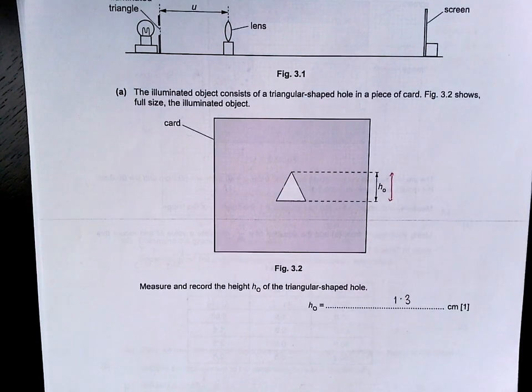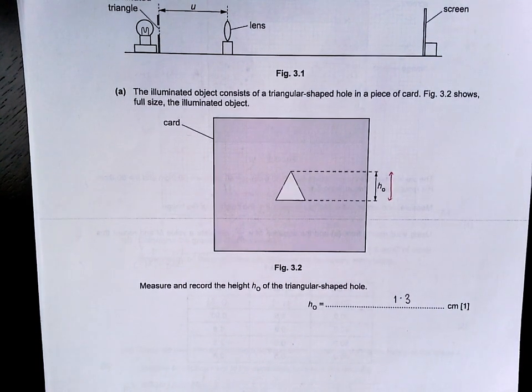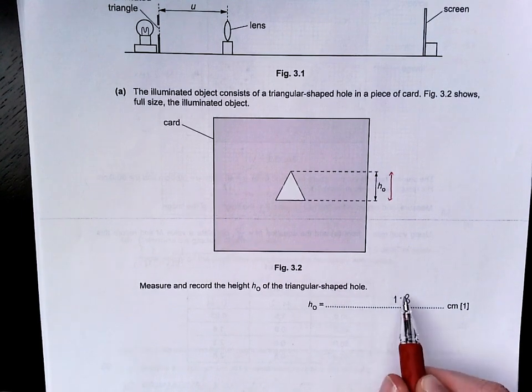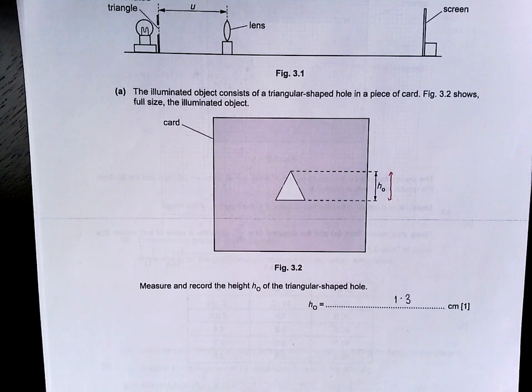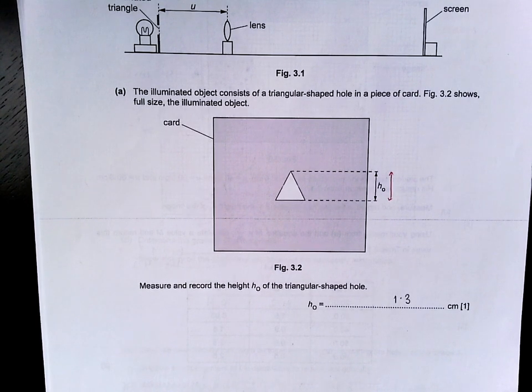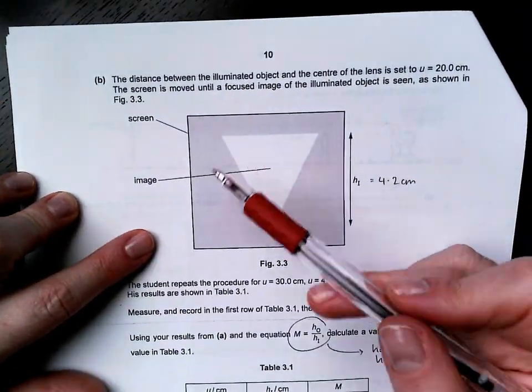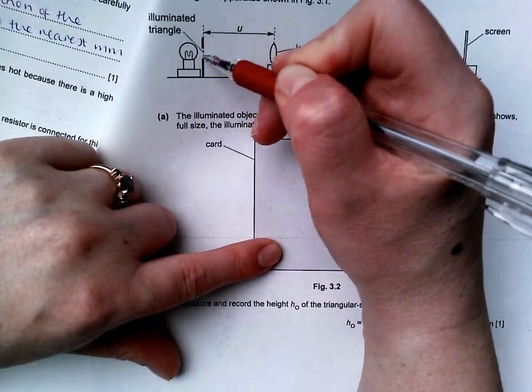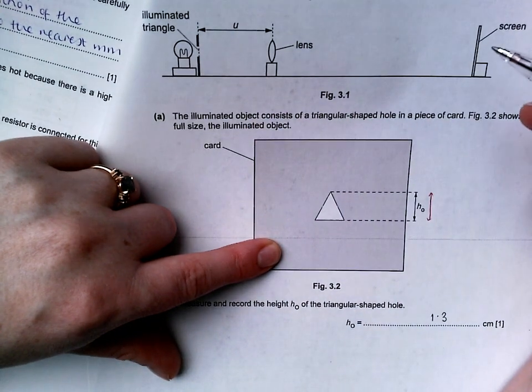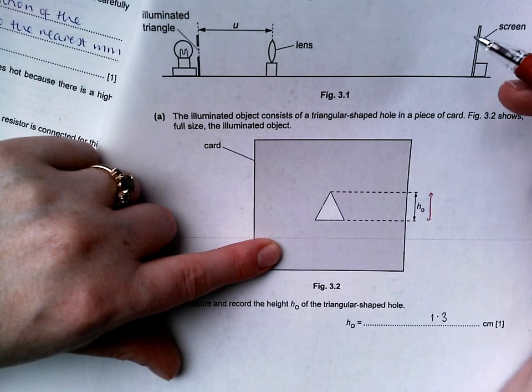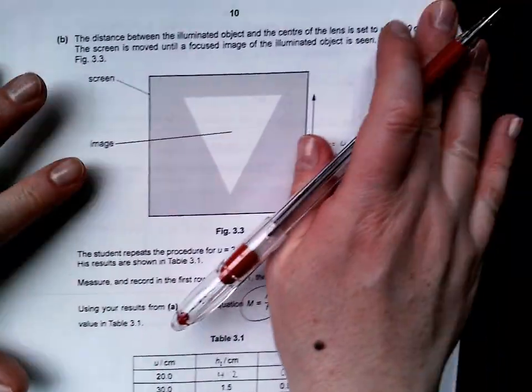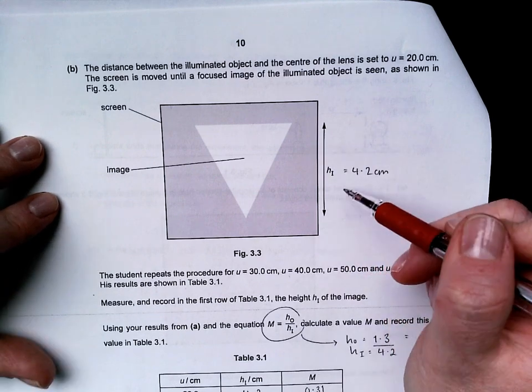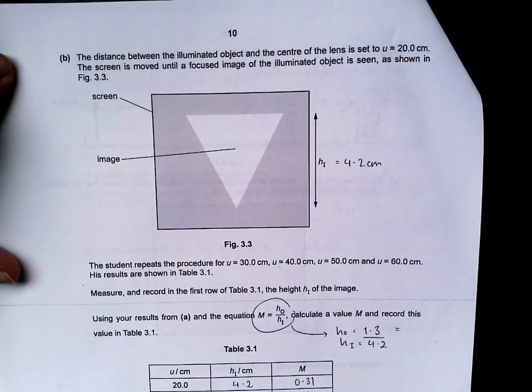The illuminated object consists of a triangular shaped hole. It says measure and record the height H0 of the triangular shaped hole. You literally just needed to get a ruler and measure that length. For some odd reason, when the photocopying happened, some were slightly different. I checked yours all individually. I have 1.3 centimeters for mine. In B, it then gives you the image. On the next page, the image is formed on the screen. We're measuring the height of the image. Mine was 4.2 centimeters.